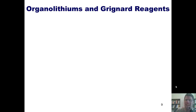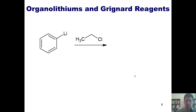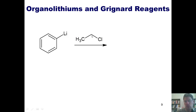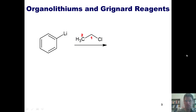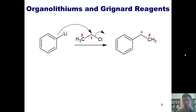Now for the organolithium example: phenyl lithium reacts with ethyl chloride. There is effectively a negative charge on the carbon in the ring bonded to lithium, and a partial positive charge on carbon 1 attached to chlorine. The negatively charged carbon thrusts its electrons into carbon 1, kicking off the chloride, and gives the coupled product.